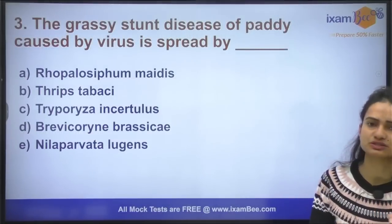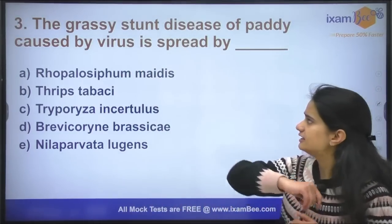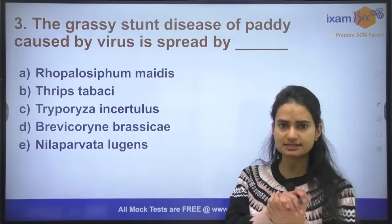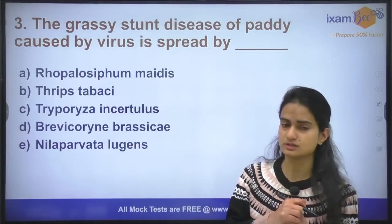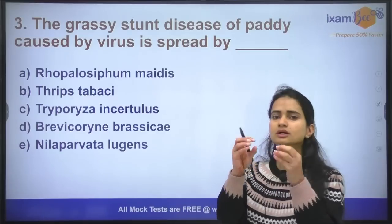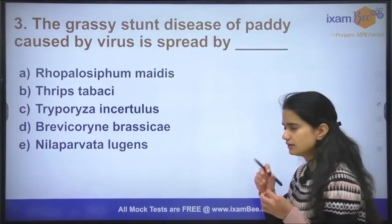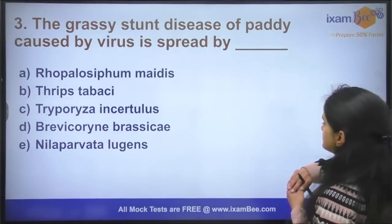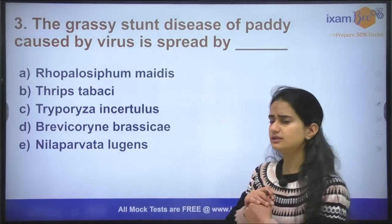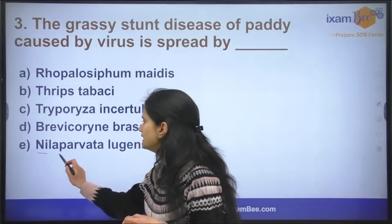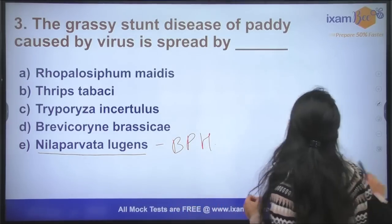Question number three: grassy stunt disease of paddy is caused by a virus. Different viral diseases require a vector to transmit to the plant. For grassy stunt disease, the vector required is Nilaparvata lugens, also known as the brown plant hopper.